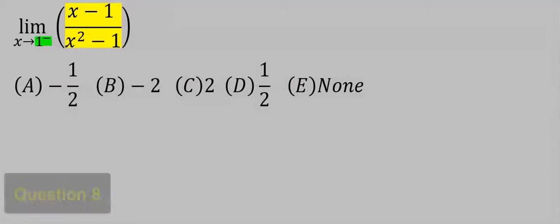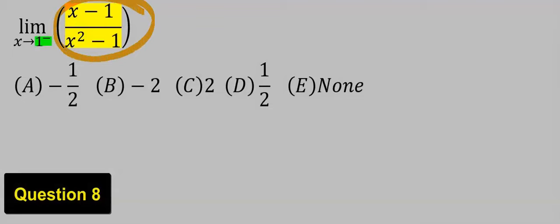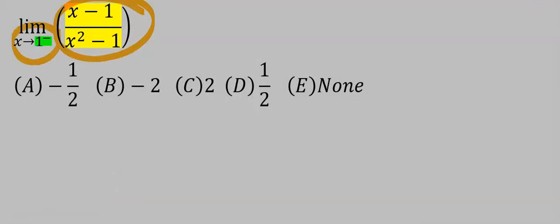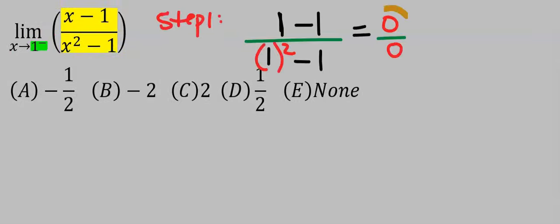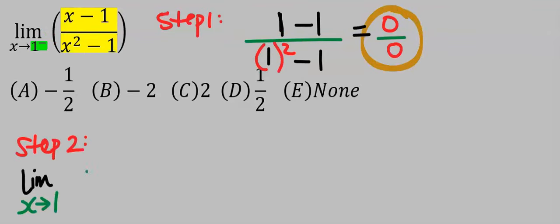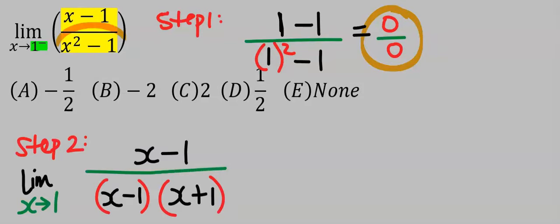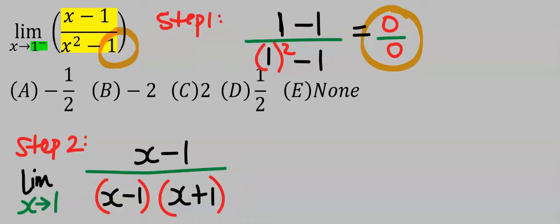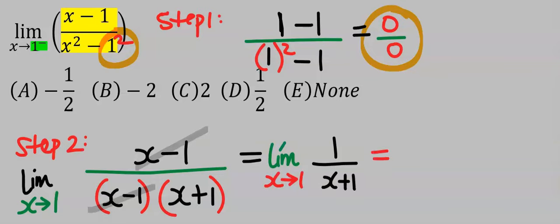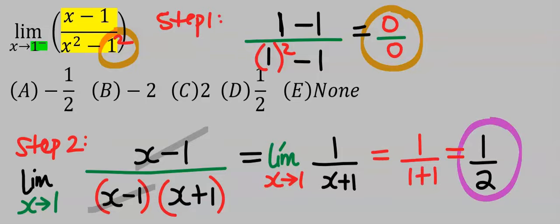Consider this next question: take the limit of this function as x tends to 1⁻. The minus superscript indicates we approach from the left. By plugging in, we get 0 over 0. In step two, apply L'Hôpital's rule using difference of two squares at the denominator — we can do this because 1 is the same as 1 squared. This cancels, and taking the limit of the remaining function, we get 1 over 2, which is option D.